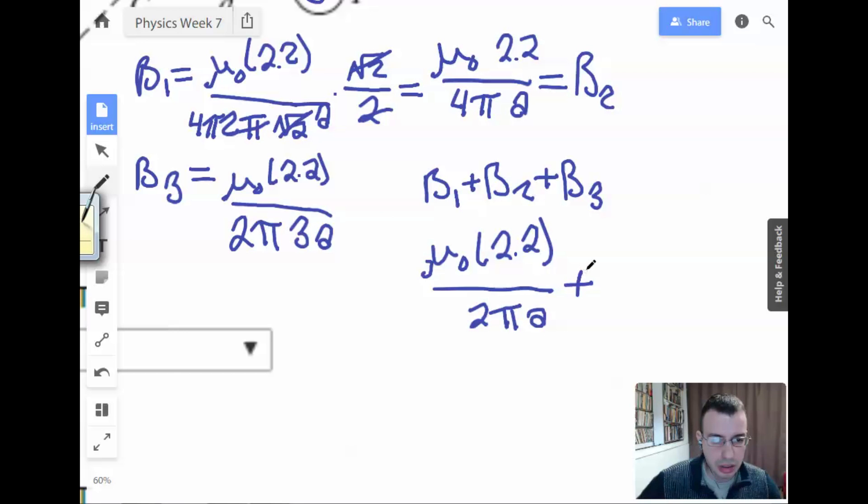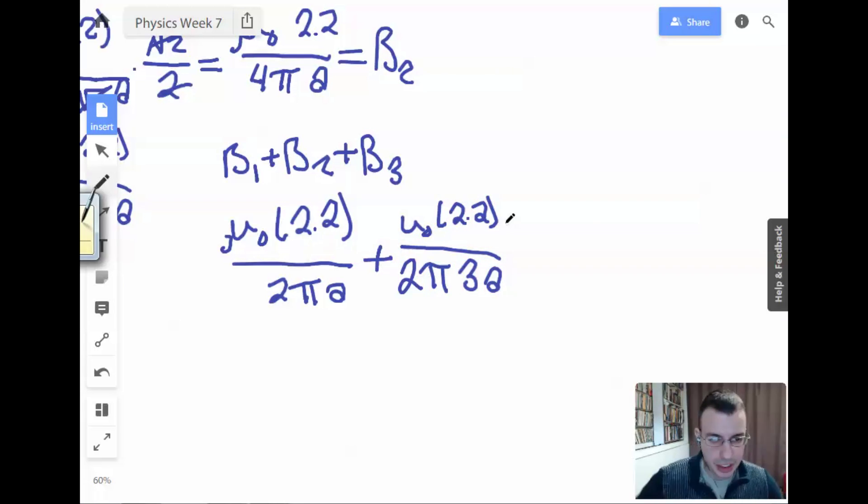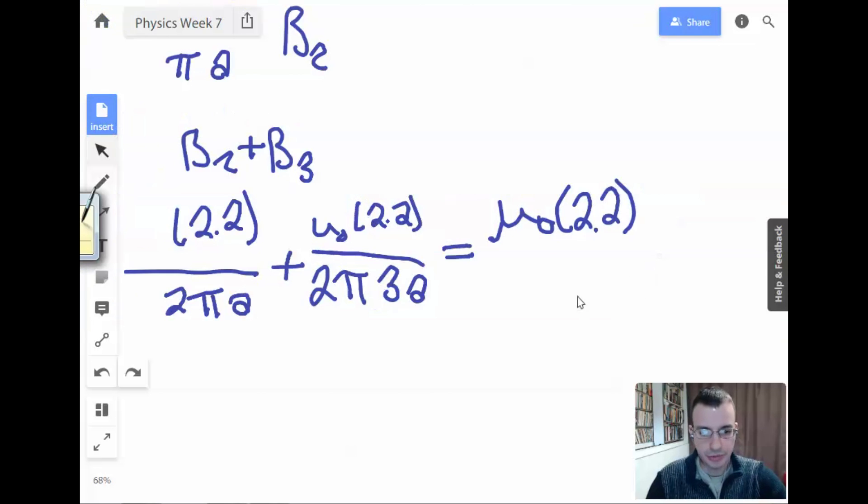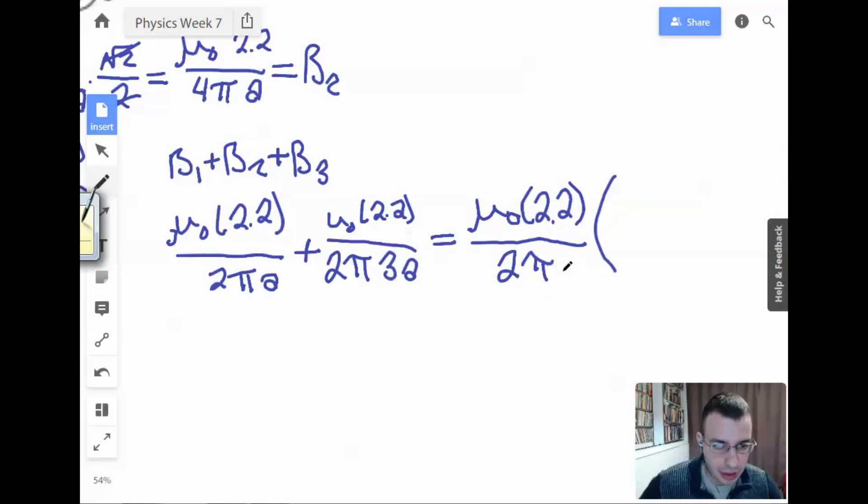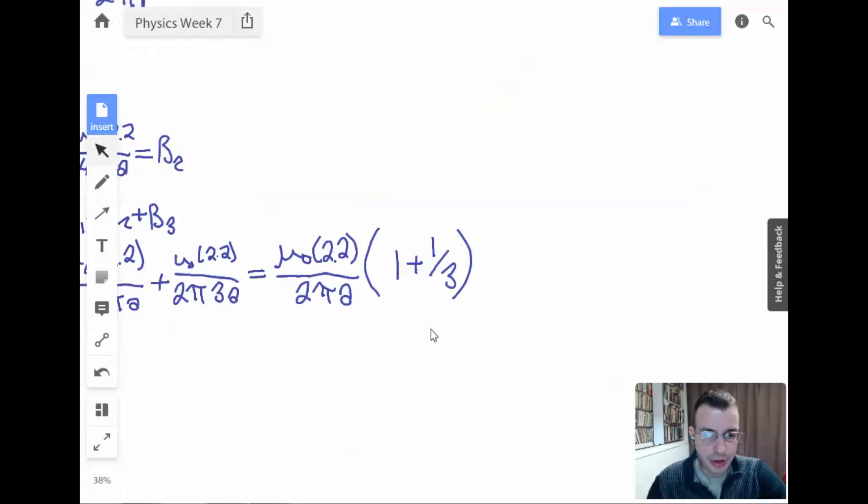Okay, so now we're going to do B₁ plus B₂ plus B₃. B₁ and B₂ are the same, so I'm basically going to call it 2B₁. So μ₀ times 2.2, instead of writing a 4 on the bottom I'm going to call that 2πA, plus the same for the other term. I'm going to factor out μ₀ 2.2, and then we'll be able to factor out 2π from all of them. And let's see, we're left with 2πA, and we have 1 plus 1/3. That worked out pretty well.